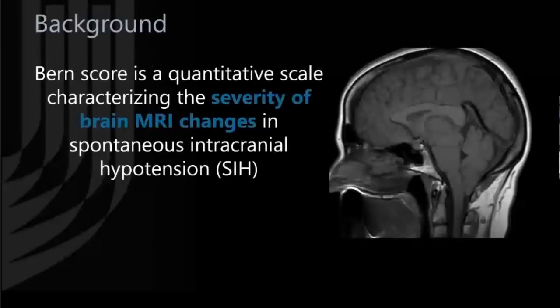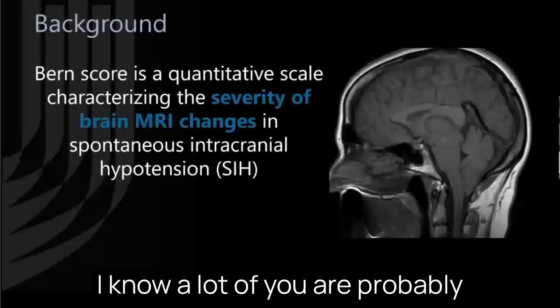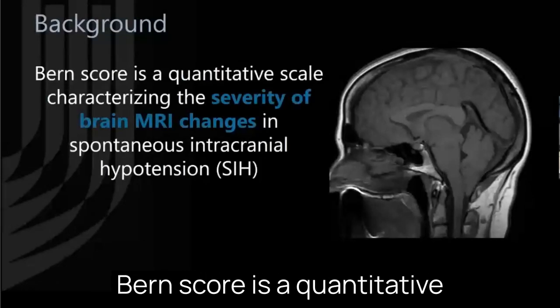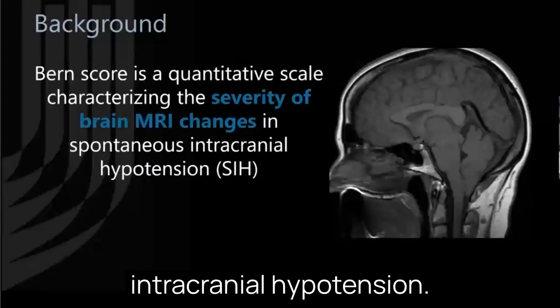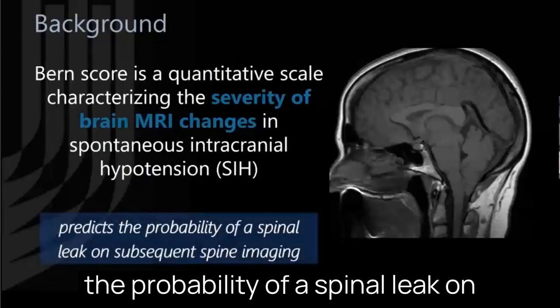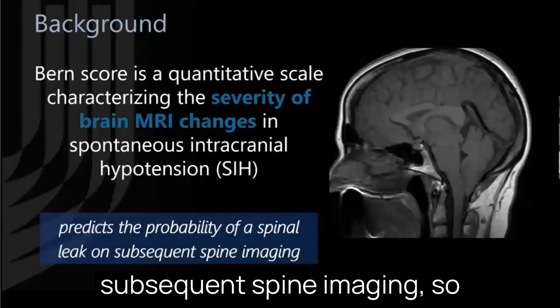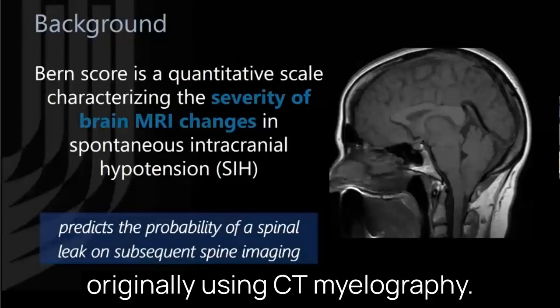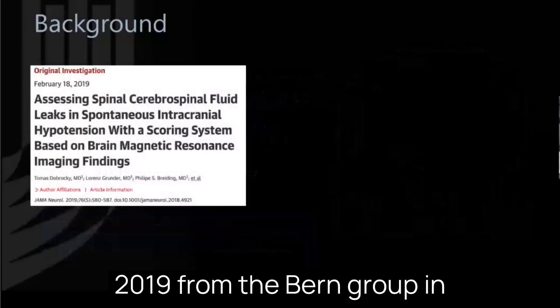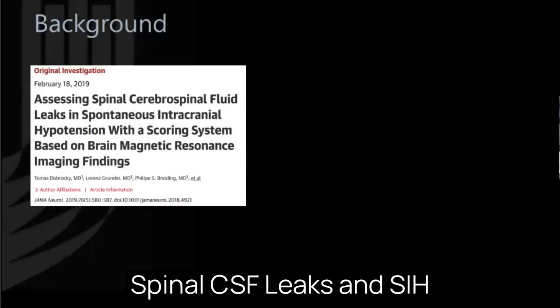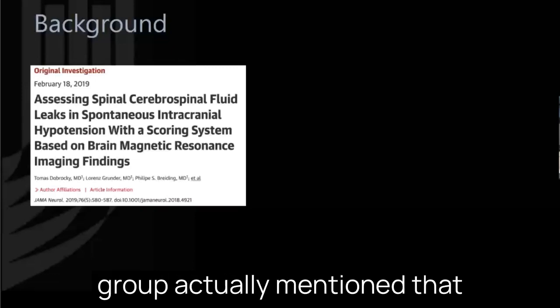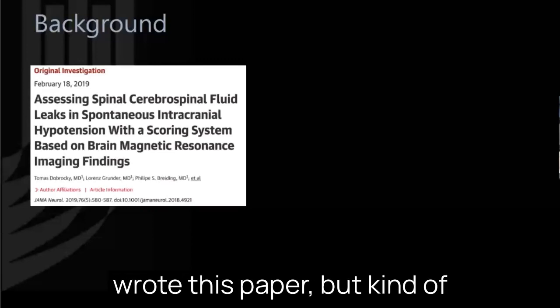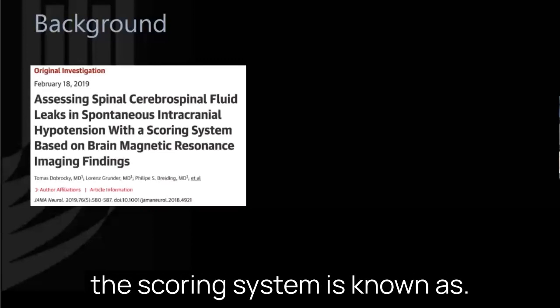I have no relevant disclosures. A bit of background on the Burn Score — the Burn Score is the quantitative scale characterizing the severity of brain MRI changes in spontaneous intracranial hypotension. Its initial use was to predict the probability of a spinal leak on subsequent spine imaging, originally using CT myelography. This was the landmark publication from the Bern group in Switzerland in 2019, titled 'Assessing Spinal CSF Leaks in SIH with a Scoring System Based on Brain MRI Findings.' At ASNR this year, this group mentioned that they didn't actually term the score the Burn Score when they wrote the paper, but casually that's become what this scoring system is known as.